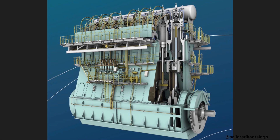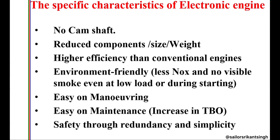I will be using PowerPoint slides to explain what is the difference between a conventional engine and an electronic engine. The specific characteristics of electronic engines: there is no camshaft present. We also find reduced components, size, and weight because of fewer components attached to the electronic engine. They come with higher efficiency than conventional engines, are more environment friendly, less knock, no visible smoke, easy on maneuvering and maintenance, and safety-wise also more reliable.